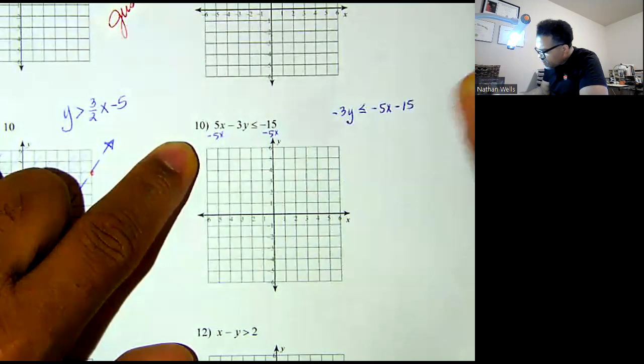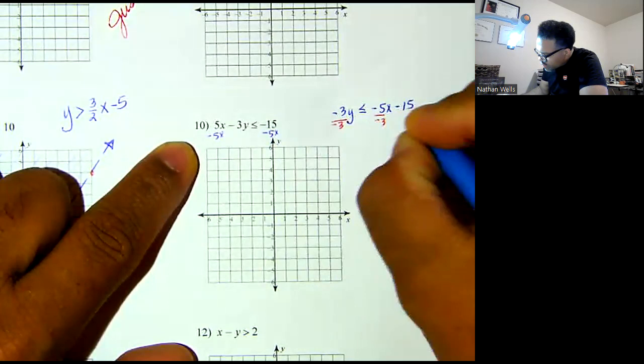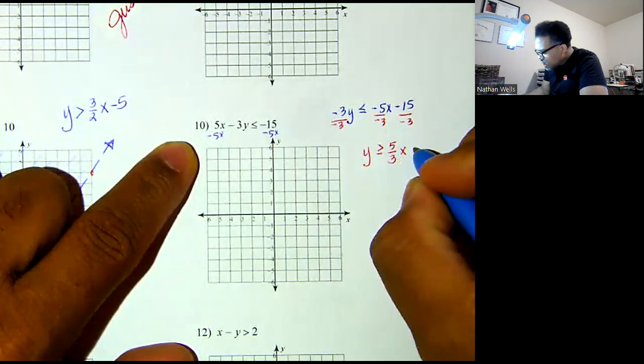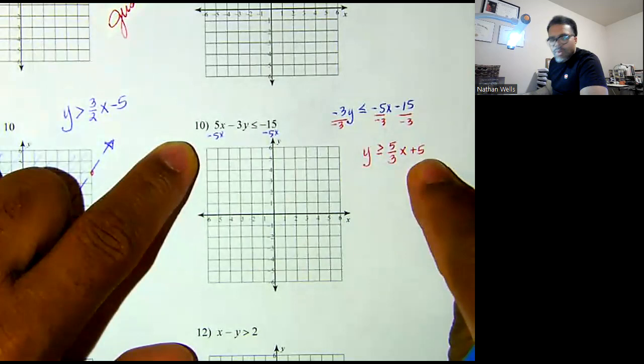I'm going to divide by negative 3, all terms by negative 3. Since I'm dividing by a negative number, I flip my sign. I'll end up with a positive 5/3 x, and negative 15 divided by negative 3 is positive 5.